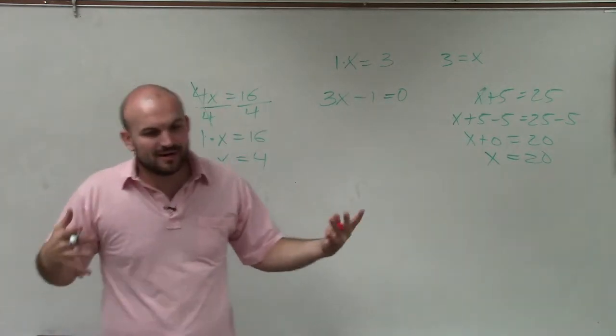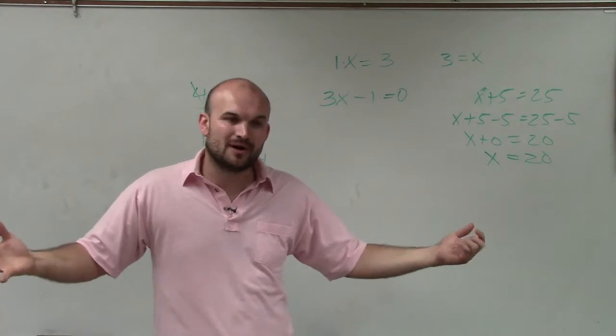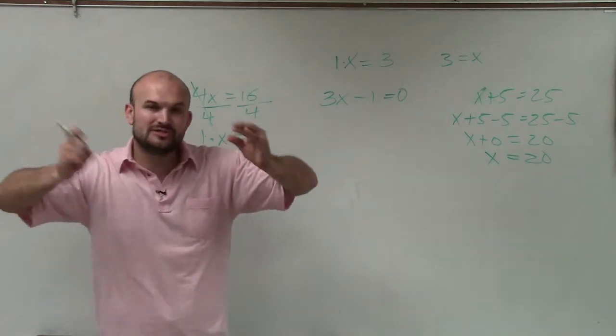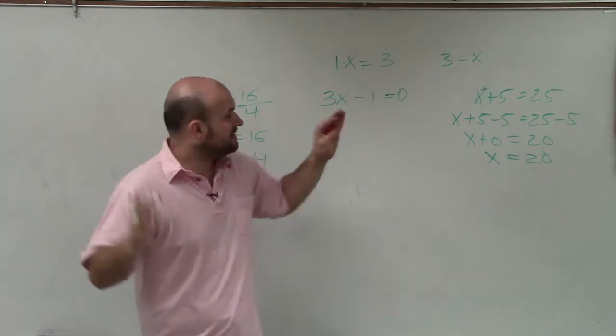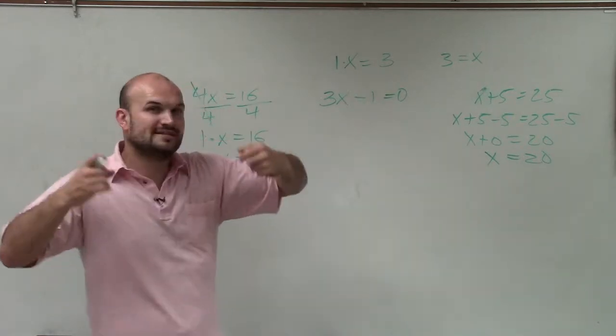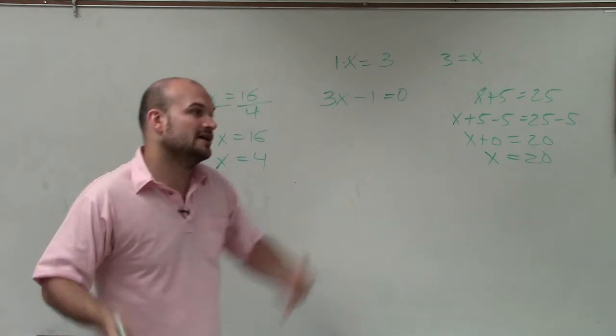But the basic thing that we want to do whenever we even have a very complicated problem is get it down to its two-step equation. Right? Combine like terms, apply distributive property, everything else. But get it to its two-step equation. Because then we're only dealing with two operations that we have to undo.